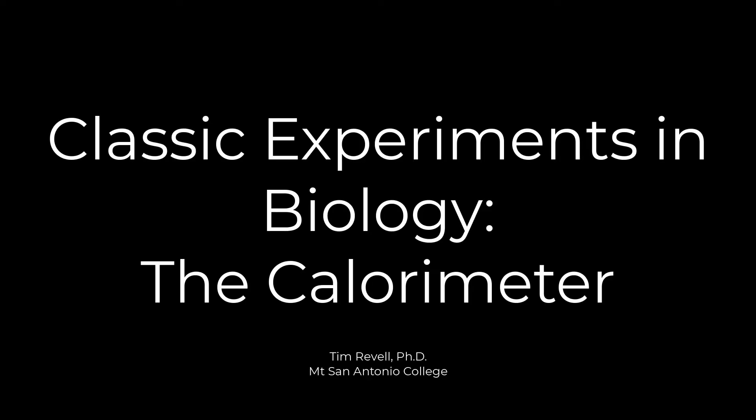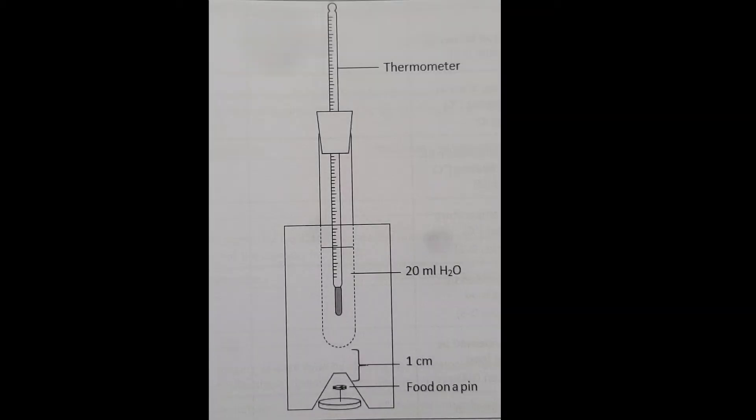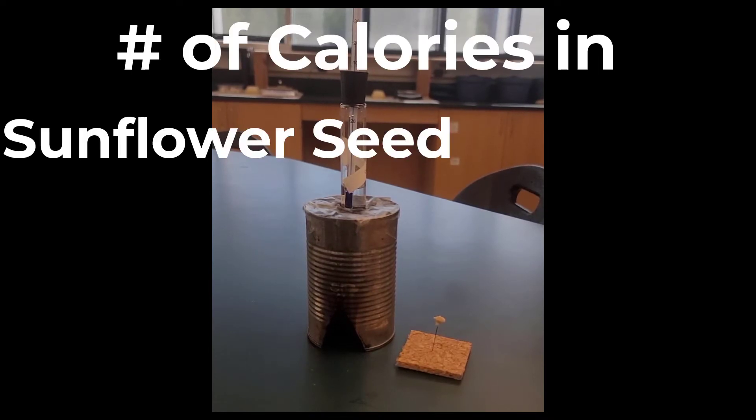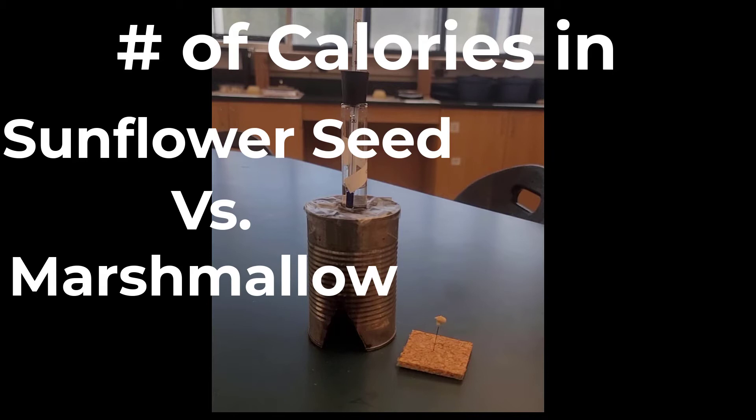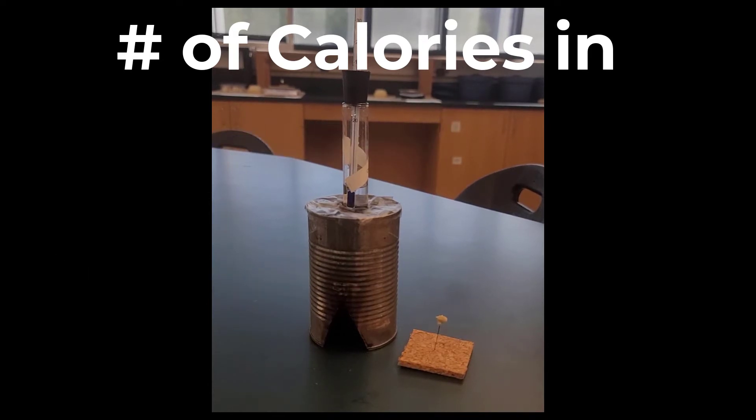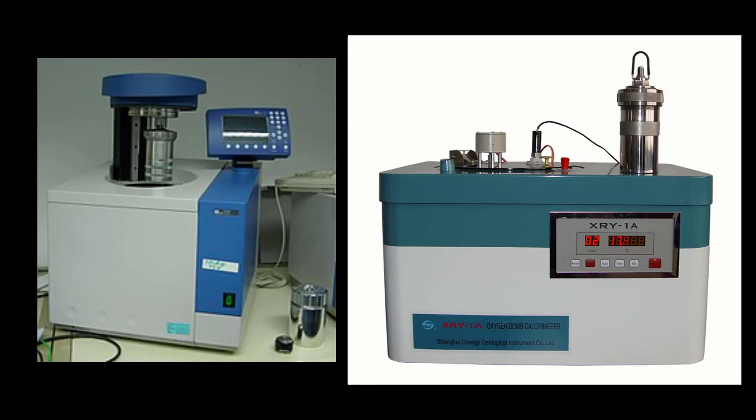All right, hi everybody. Today in this classic biology experiment, we're going to use a calorimeter to determine the number of calories that are in a sunflower seed versus a marshmallow. This type of device is called a calorimeter.